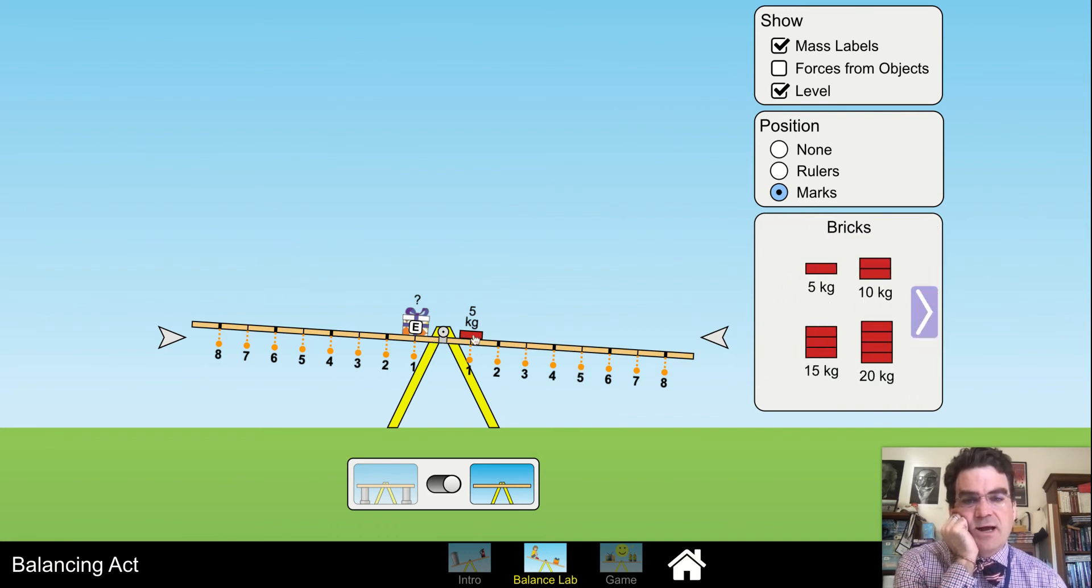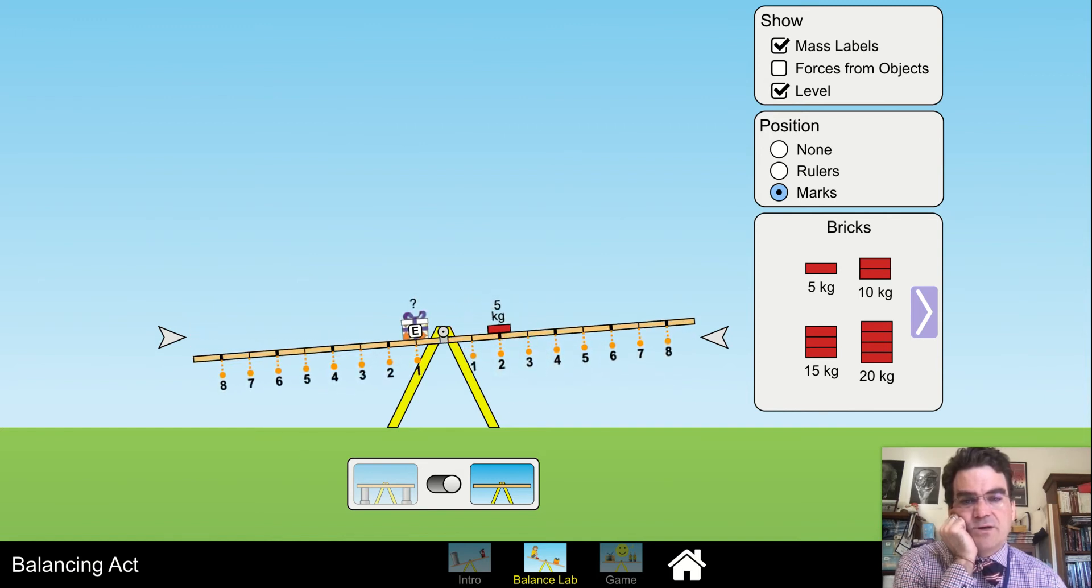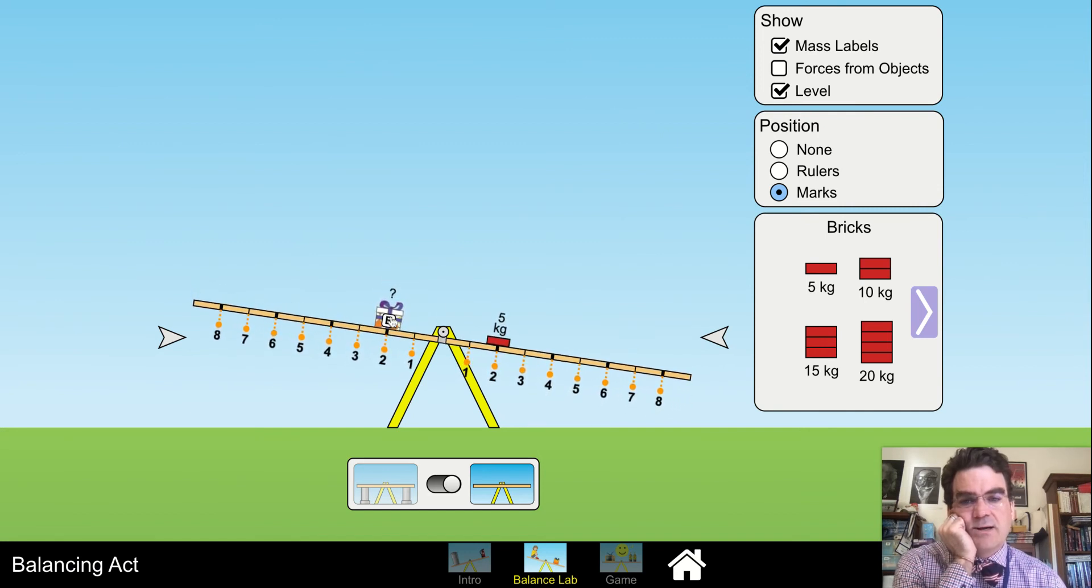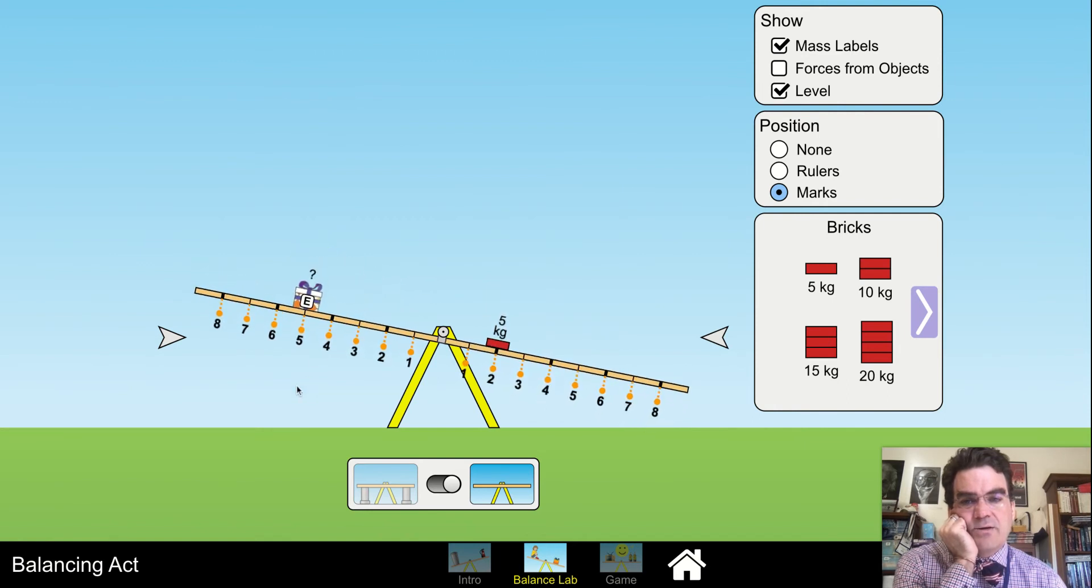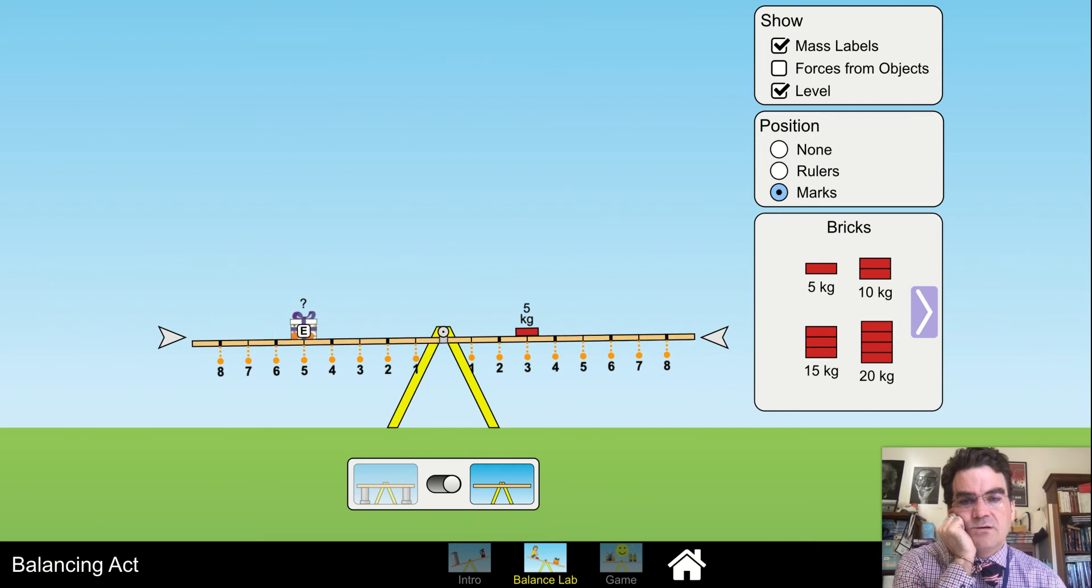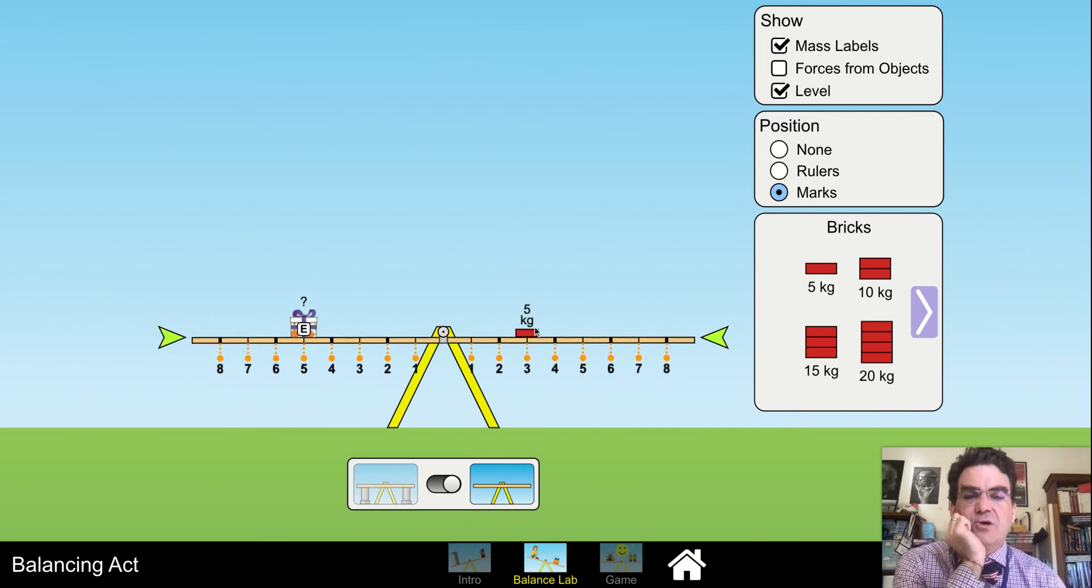If I put it on the 2, that's not going to work. How about if I put this all the way out on the 5? And maybe if I bring this over here to the 3. Yes, there it is. So 5 times 3 is a torque of 15 on the right. And then 15 divided by 5, the mass of E has to be 3, which makes sense. We determined that it was less than 5. So the mass of E is 3 kilograms.